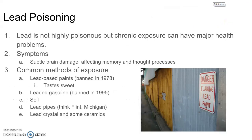Lead poisoning has entered our attention in recent years with all of the issues in Flint, Michigan. Lead itself is not a highly poisonous metal, but chronic exposure can have major health problems. Being exposed to it for years can lead to subtle brain damage that will affect your memory and thought processes. It also causes people to have lower IQs because of how it affects memory and thought processes.